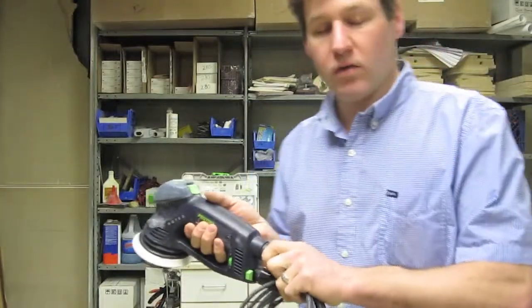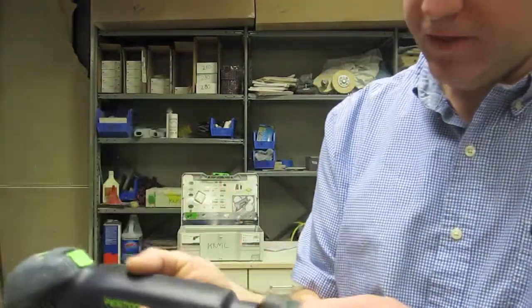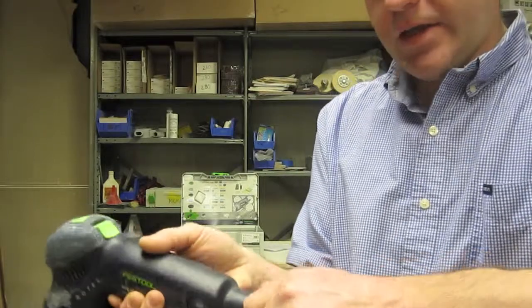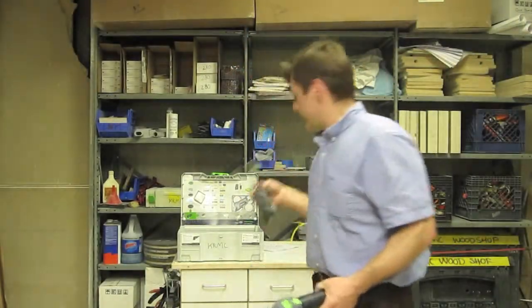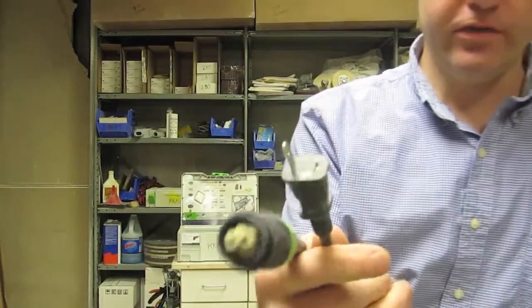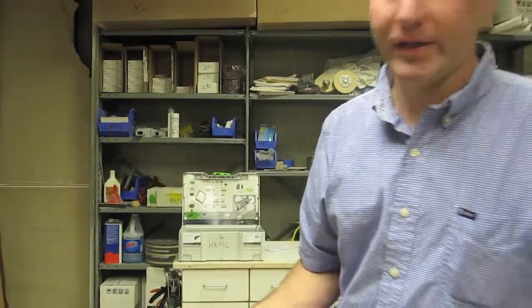The cord lock cord is removable for easy replacement in case you need to swap it between different Festool tools or in case somebody abuses it and it gets damaged and needs to be replaced quickly.